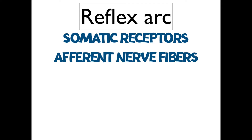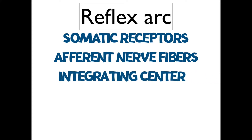With the somatic receptors, you're going to have afferent nerve fibers. This signal travels from the somatic receptors up the arm or leg, carrying information to the posterior horn of the spinal cord. Take notice that every time a response is initiated, the signal enters the spinal cord, and that nerve fiber bifurcates — it splits into a posterior horn and an anterior horn.